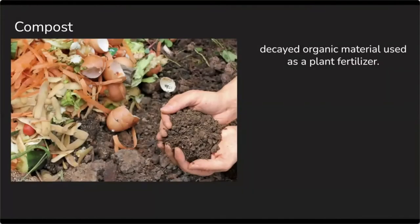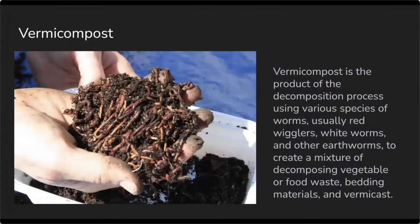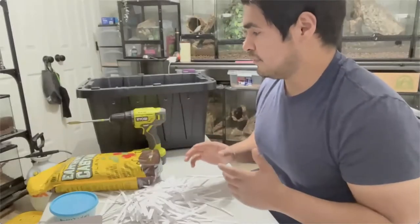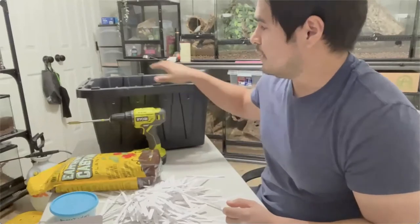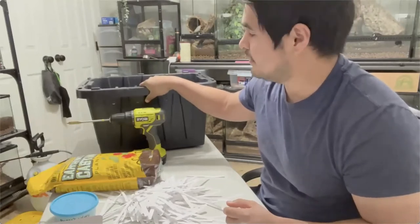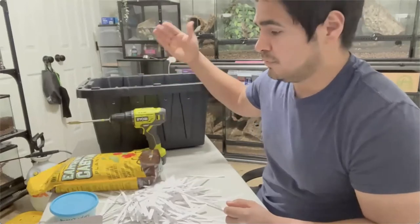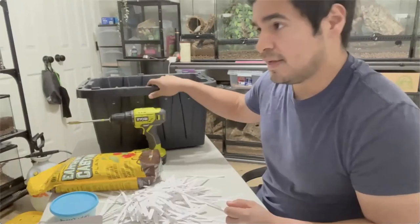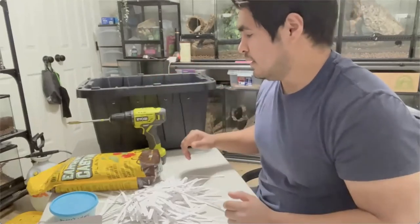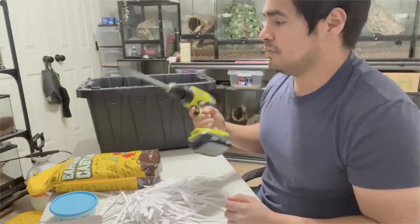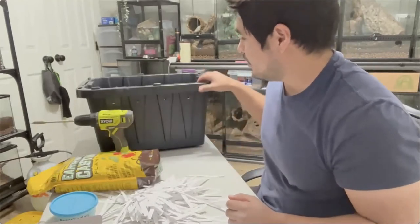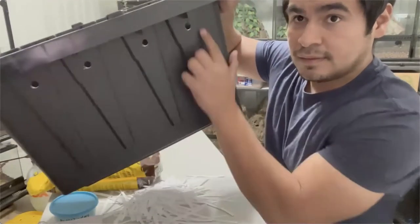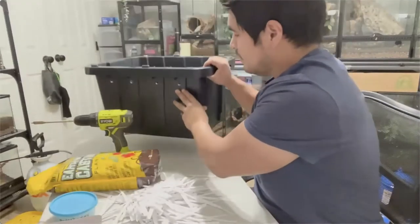Compost is the decayed organic material used as plant fertilizer. Today we're focusing on a special type called vermicompost — the product of the decomposition process using various species of worms, usually red wigglers, white worms, and other earthworms. For your vermicompost bin you'll need a bin. If you're just starting off, I recommend something in the 12- to 15-gallon range. You'll also need a drill, simply used for ventilation holes, which I've already drilled into my container. The worms need to be able to breathe.